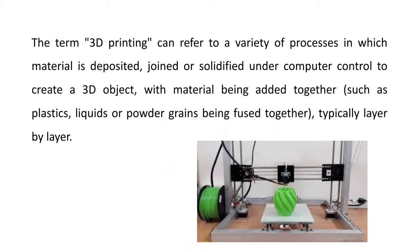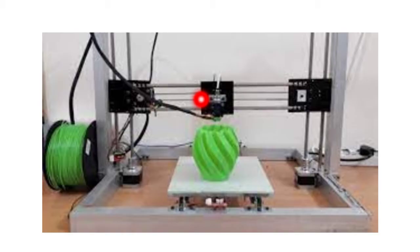Here you can see a 3D printing machine. This is a mechanism which deposits the material layer by layer, and this mechanism is controlled with the help of a computer. This mechanism can move along the x-axis, along the y-axis and along the z-axis, and its movement is controlled with the help of a computer.